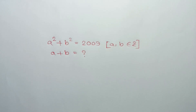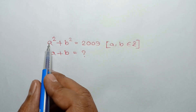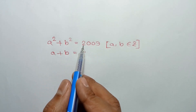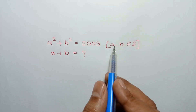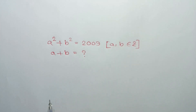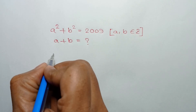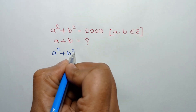Hi everyone. In this video, I am going to show how to find the value of A plus B where A squared plus B squared is 2009 and A and B are integers.